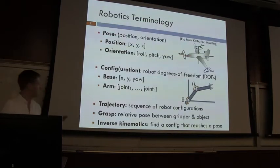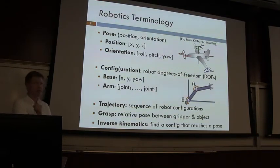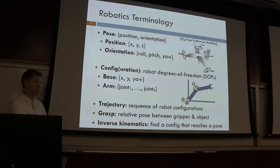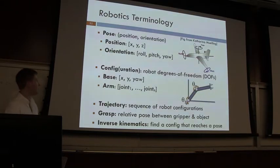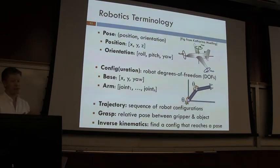On motion planning terminology: a pose describes an object's location including position (XYZ) and orientation (roll-pitch-yaw). A configuration is the set of values of the robot's degrees of freedom — base values like XY and yaw, or joint angles for a robot arm. A trajectory is a sequence of robot configurations. A grasp is a relative pose between the gripper and object such that the gripper can attach to and carry the object. Inverse kinematics finds a configuration that reaches a given pose — deciding where to stand to pick up an object.